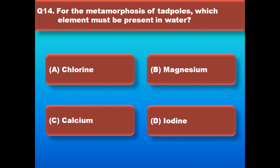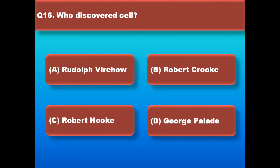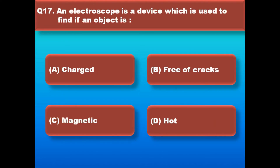For the metamorphosis of tadpoles, which element must be present in water? Right answer is iodine. Which one of the following solutions will not conduct electricity? Right answer is vegetable oil. Who discovered the cell? Right answer is Robert Hooke.